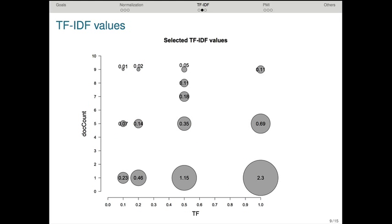Here's a look at some representative TF-IDF values. The x-axis is the raw TF value, the term frequency value, and the y-axis gives you the number of documents that the word co-occurs in. The TF-IDF values are largest when the word is highly frequent and occurs in relatively few documents. And correspondingly, the values get smaller as the word occurs in more documents or as it becomes less frequent in those documents.